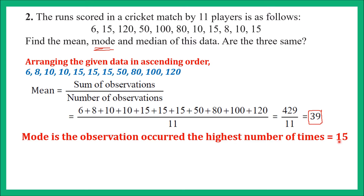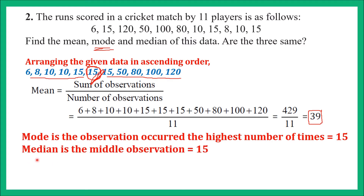Now let us find the median. Median is the middle observation. We have 11 players, so 11 observations. Adding 1 gives 12, and 12 ÷ 2 = 6. So the 6th observation is the median. Counting from the left: 1, 2, 3, 4, 5, 6 — the 6th observation is 15. On each side there are 5 observations, so 15 is the center. Median of this data is 15.